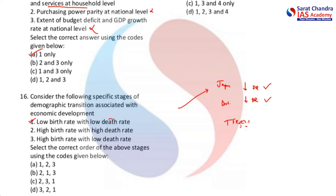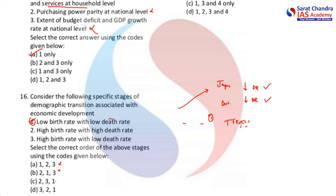So low birth rate and low death rate, which corresponds to option one in the arrangement, will come at the last stage of economic development. Options A and B can be eliminated because option one comes last. We then need to see which comes between options two and three for the arrangement.